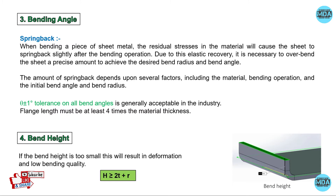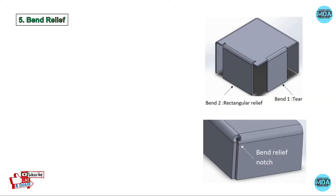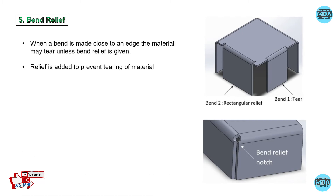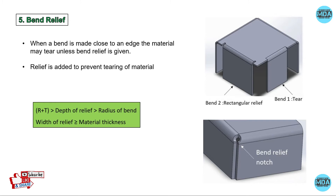For bending relief — if you directly bend without relief, it will tear the material. We add a rectangular relief to prevent tearing. The depth of relief must be greater than the radius of the bend and less than the radius plus thickness. The width of the relief must be greater than or equal to the material thickness.